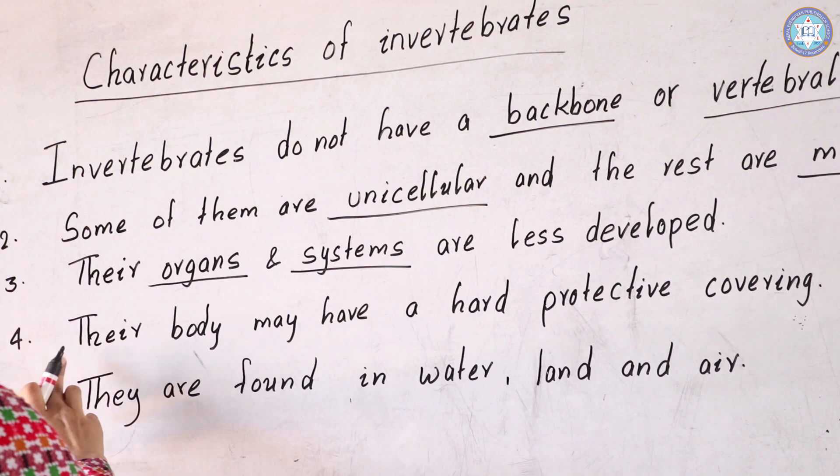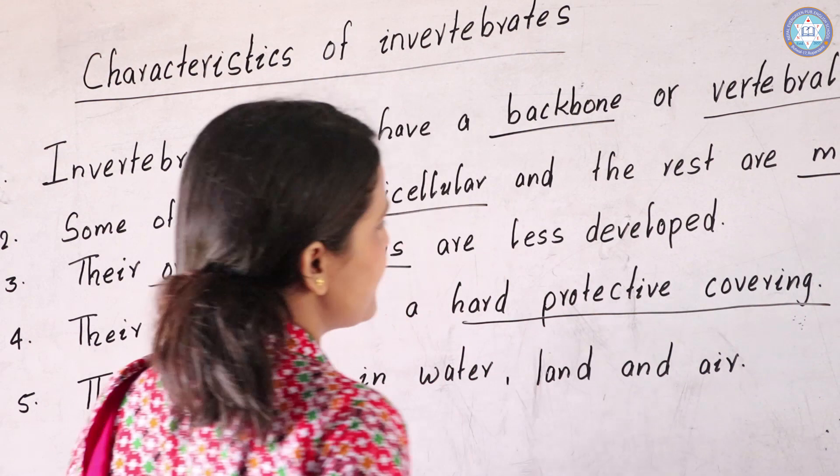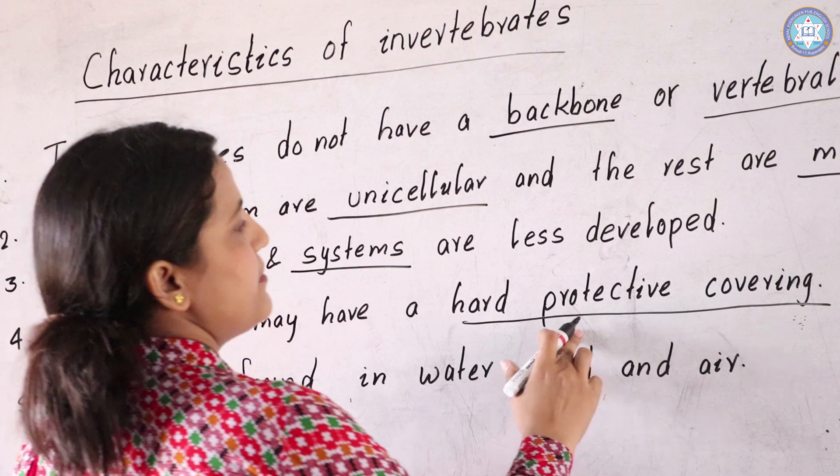The fourth point is: their body may have a hard protective covering. That means the internal parts are covered with a protective layer, which covers and protects their internal structure.